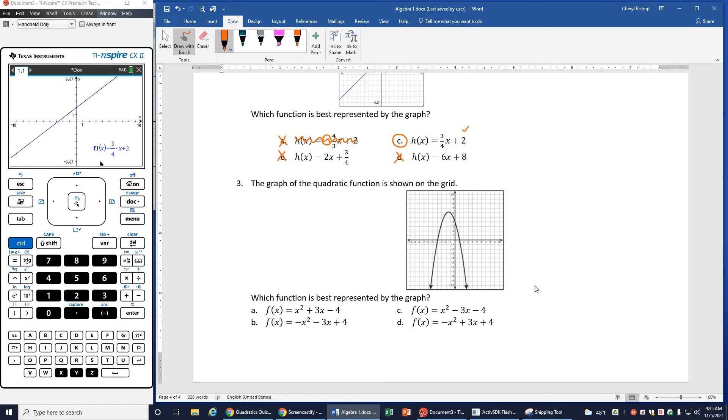Okay. Number 3, the graph of the quadratic function is shown on the grid. So here I have this downward opening parabola. So since I have a downward opening parabola, I know in front of my x squared, I should have a negative term. So I'm going to eliminate A because in front of x squared, I have a positive 1. And I need to have a negative in order for it to open downward. I'm going to eliminate C because I have a positive 1 in front of my x squared. So I need a negative in front of x squared. B has my negative. D has my negative. So I want to graph them and see which one is going to match this graph. Okay. So let's do that.